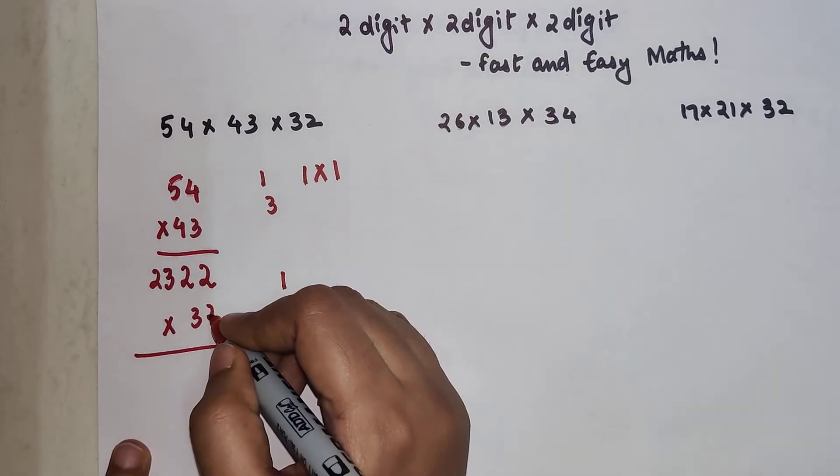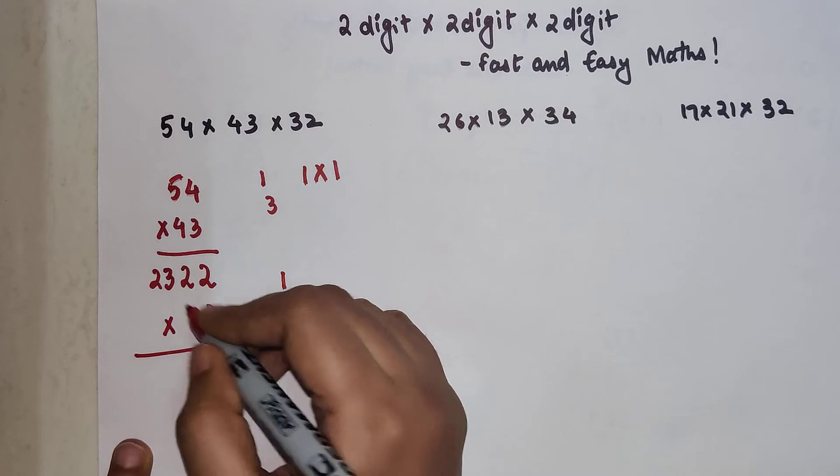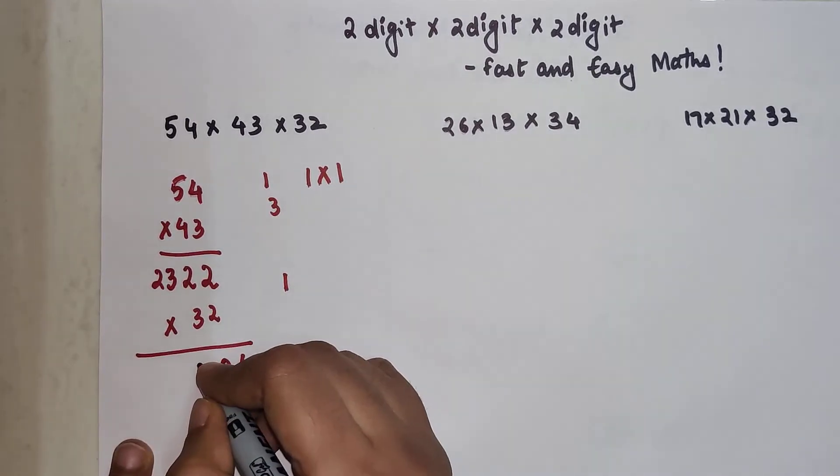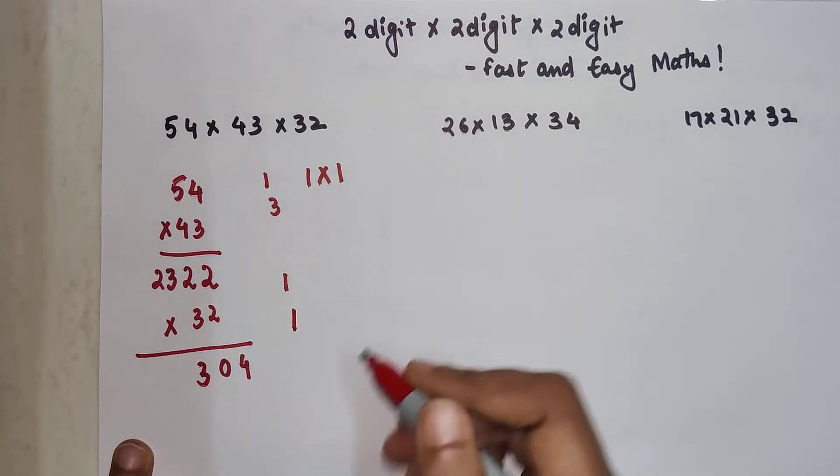Now we are going to multiply this 2 with this 3. So it is 6 and 3 into 2 is again 6. So 6 plus 6 is 12 plus 1 is going to get you 13. We are left with 1 more 1.